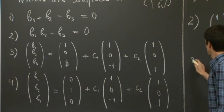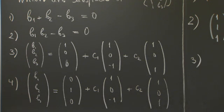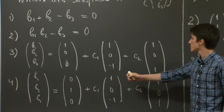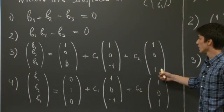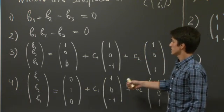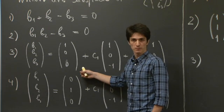OK, let's try 3. And first, so the subset in question 3 is given as the linear span of these two vectors, (1, 0, -1) and (1, 0, 1), plus the vector (1, 0, 0). OK?